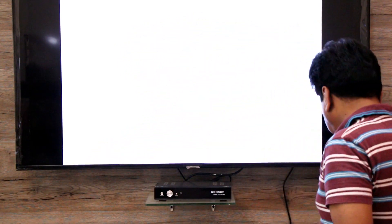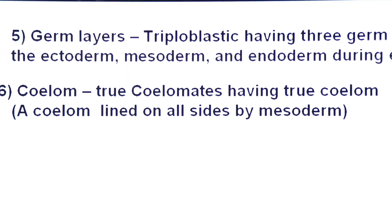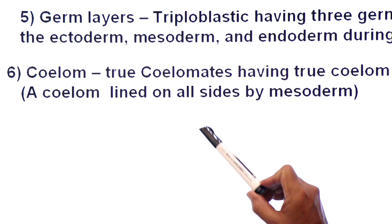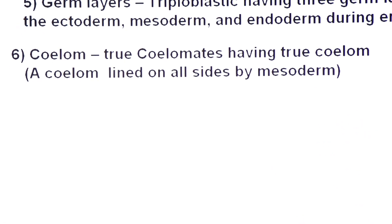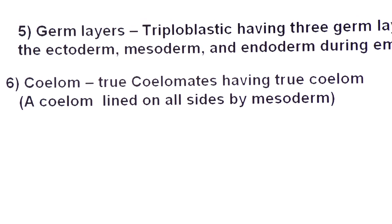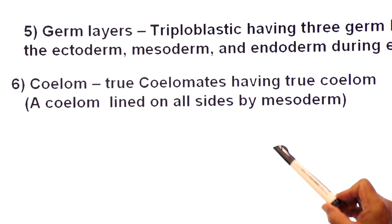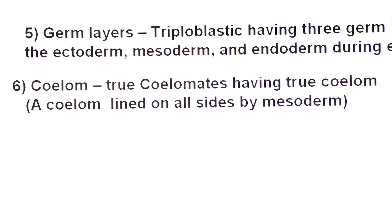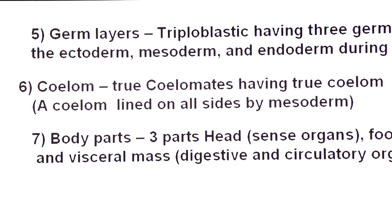Three layers are found in the embryo, and these layers give rise to organs by a process called organogenesis. Their coelom is derived from the mesoderm — it develops from the mesoderm. They are true coelomates having a true coelom, which is a coelom lined on all sides by mesoderm.